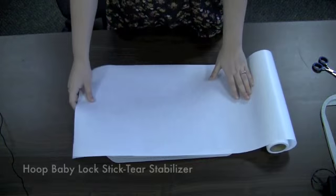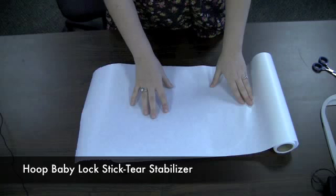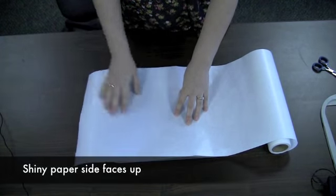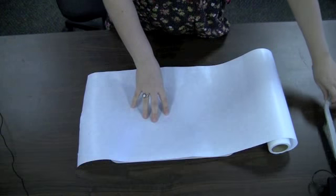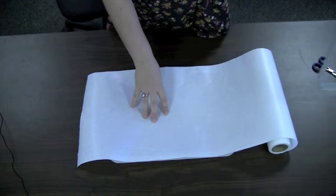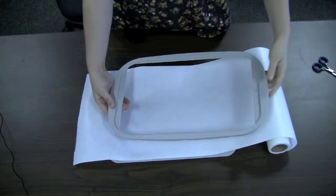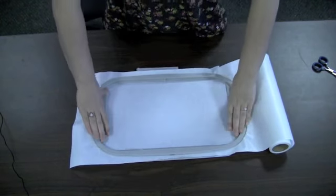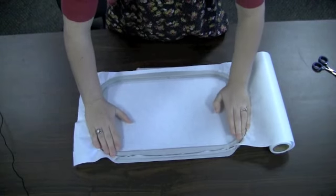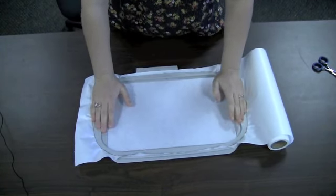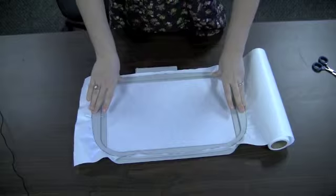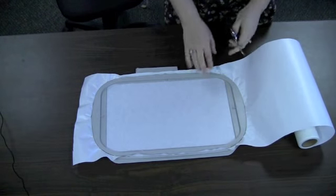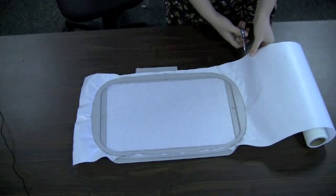Next we're going to hoop up some Baby Lock Stick Tear Tear Away Stabilizer. The shiny smooth side is up on our stabilizer. And let's put our top hoop in and cut our stabilizer off at the edge of the hoop.